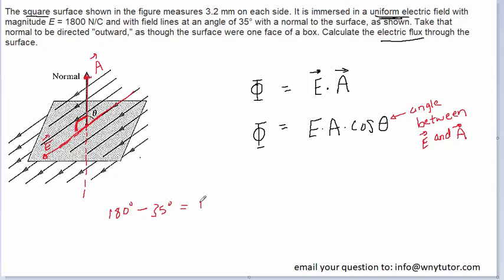That comes out to 145 degrees. So that's going to be the appropriate angle between the electric field vector and the area vector, and that's what we're going to plug in for theta. Let's go ahead and plug in all the known values.